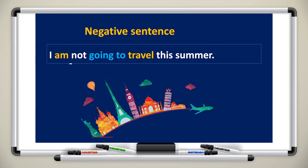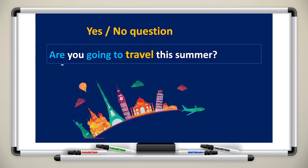To form a yes or no question using 'going to', start with the verb to be. If you're addressing a person, you say: 'Are you going to travel this summer?' The verb to be comes at the beginning of the sentence, followed by the subject, then 'going to' and the verb.